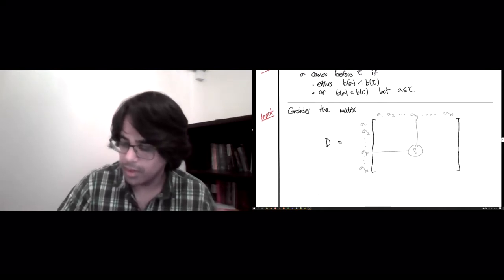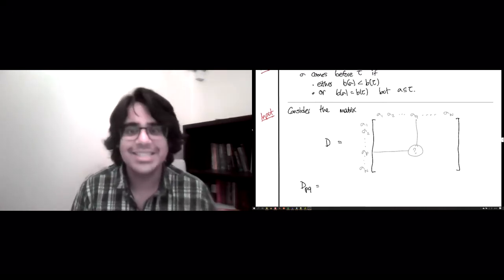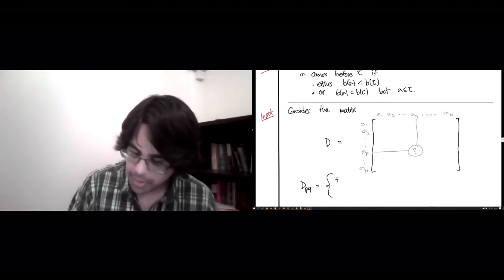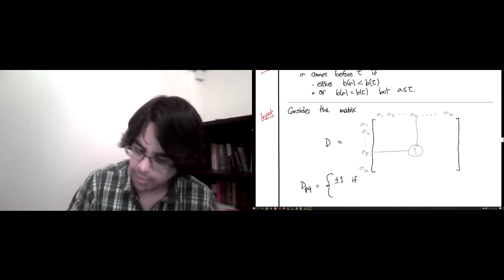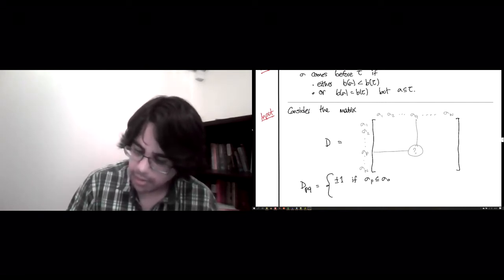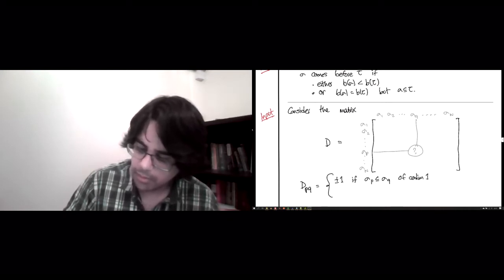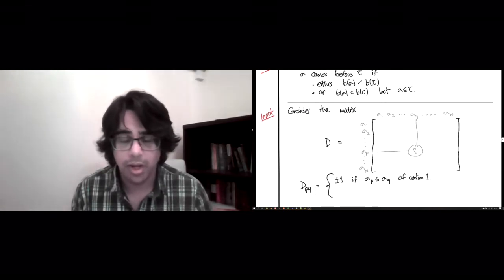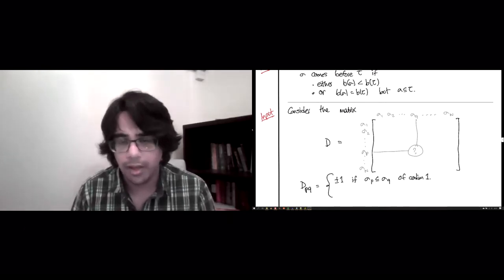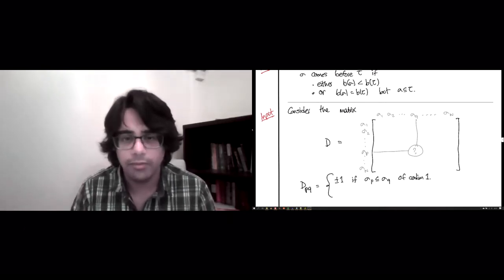And so that entry is extremely familiar and well-loved. So this is plus minus 1 if sigma P is a face of sigma Q of co-dimension 1. So dimension sigma Q minus dimension sigma P is 1. Another way of saying it is sigma P is sigma Q with one vertex removed. If you removed an odd vertex,